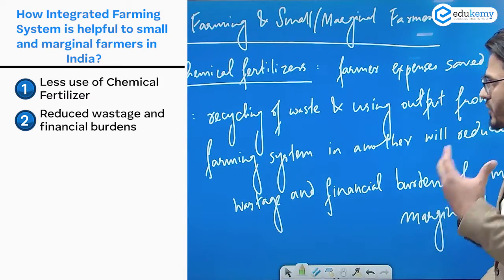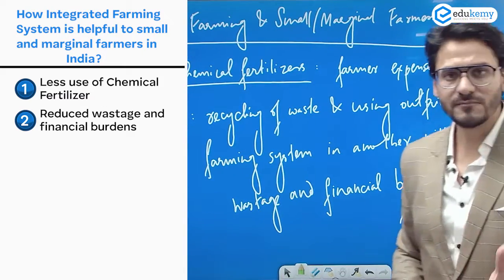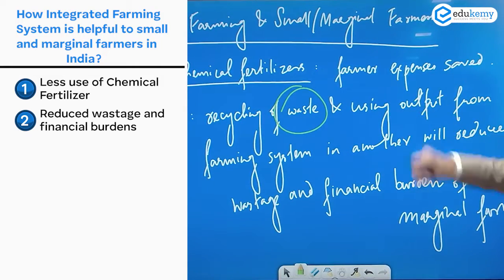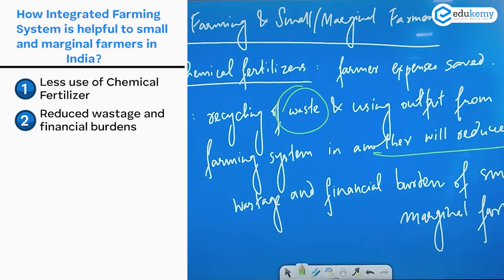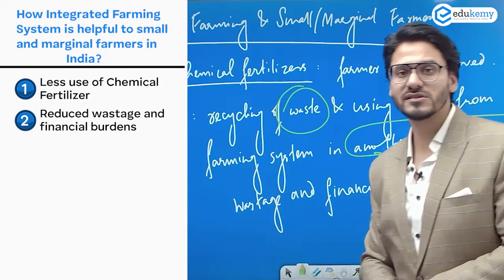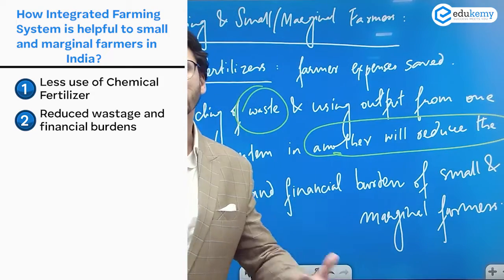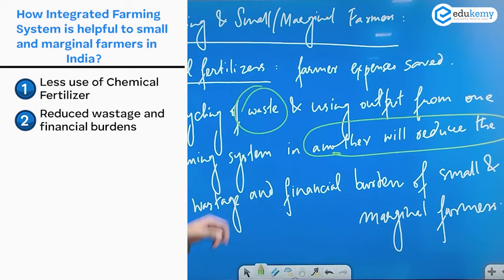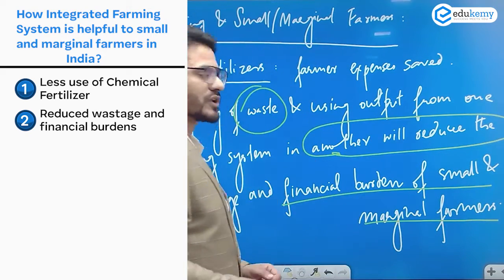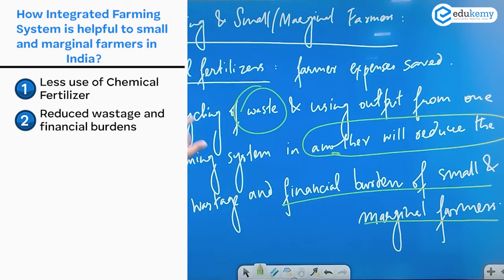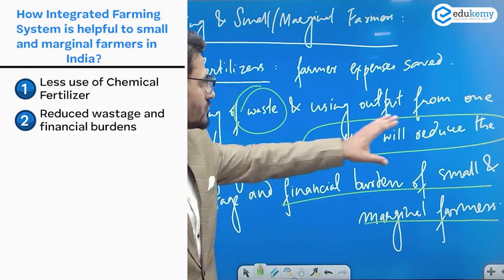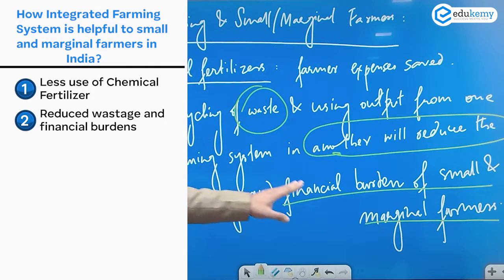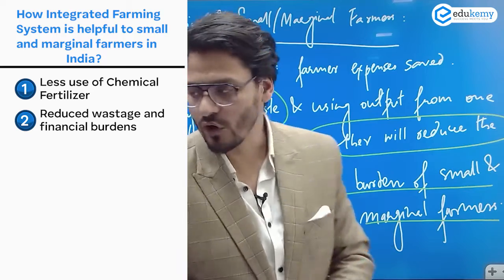Recycling of waste and using output from one farming system as input in another will reduce wastage and the financial burden on small and marginal farmers. They won't need to purchase additional inputs, leading to cost reduction.